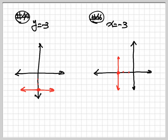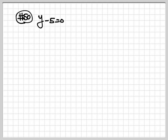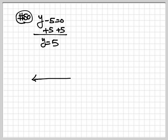Now let's go to number 50. We have y minus 5 is equal to 0. Only one variable. So we're going to solve for y: add 5 to both sides, so y is equal to 5. This one is similar to the previous questions. Because you have only one variable and y equals 5, go to 5 on the y-axis: 1, 2, 3, 4, 5 — it's over here. You just extend your line left and right, and that's your graph.